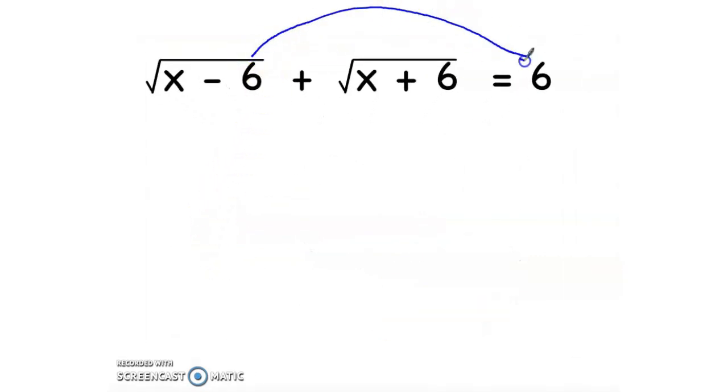Move this radical to the left hand side, so √(x+6) = 6 - √(x-6). Now square both sides.